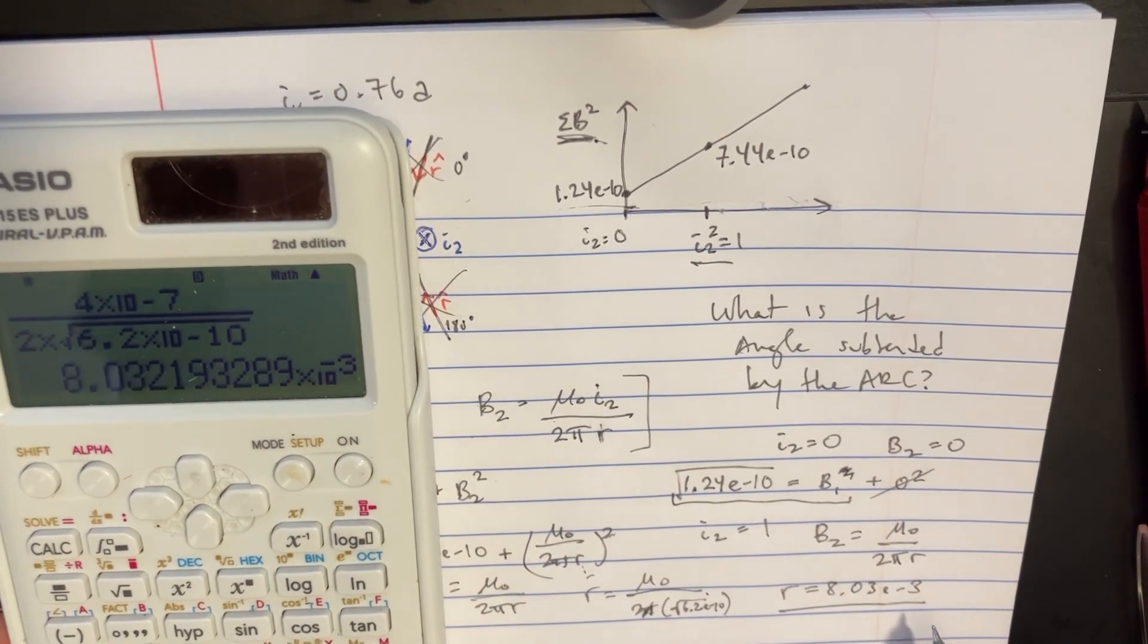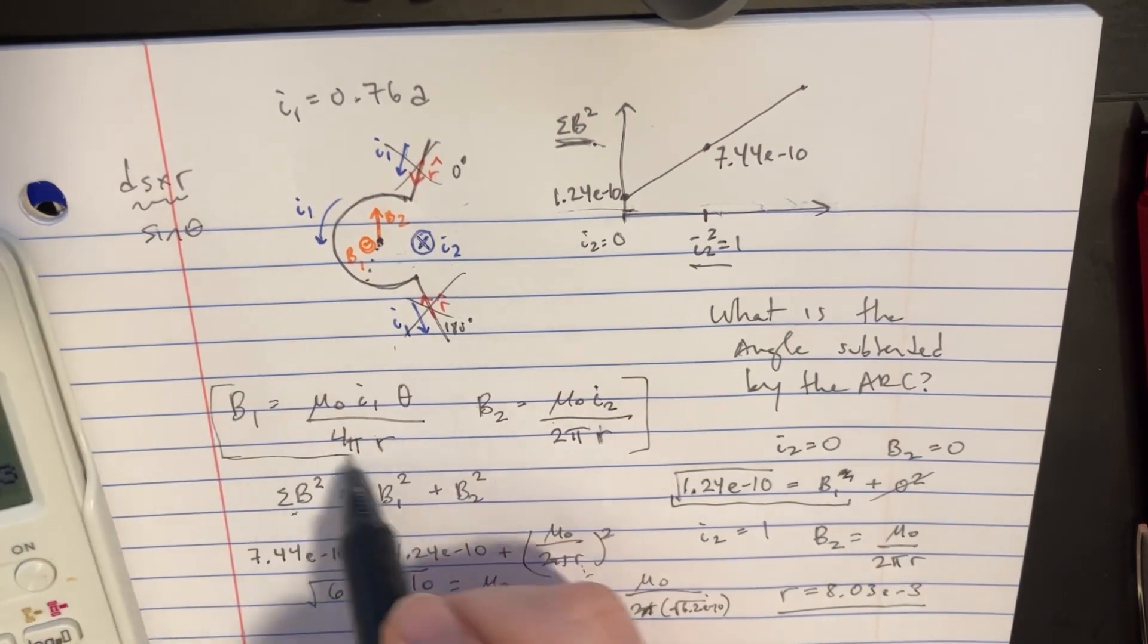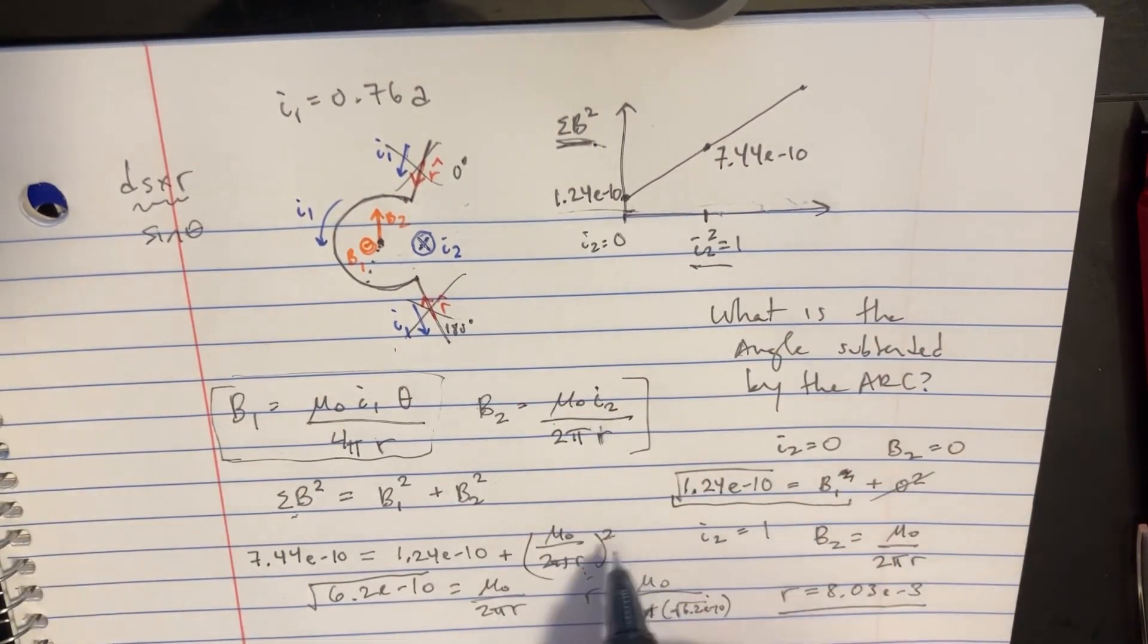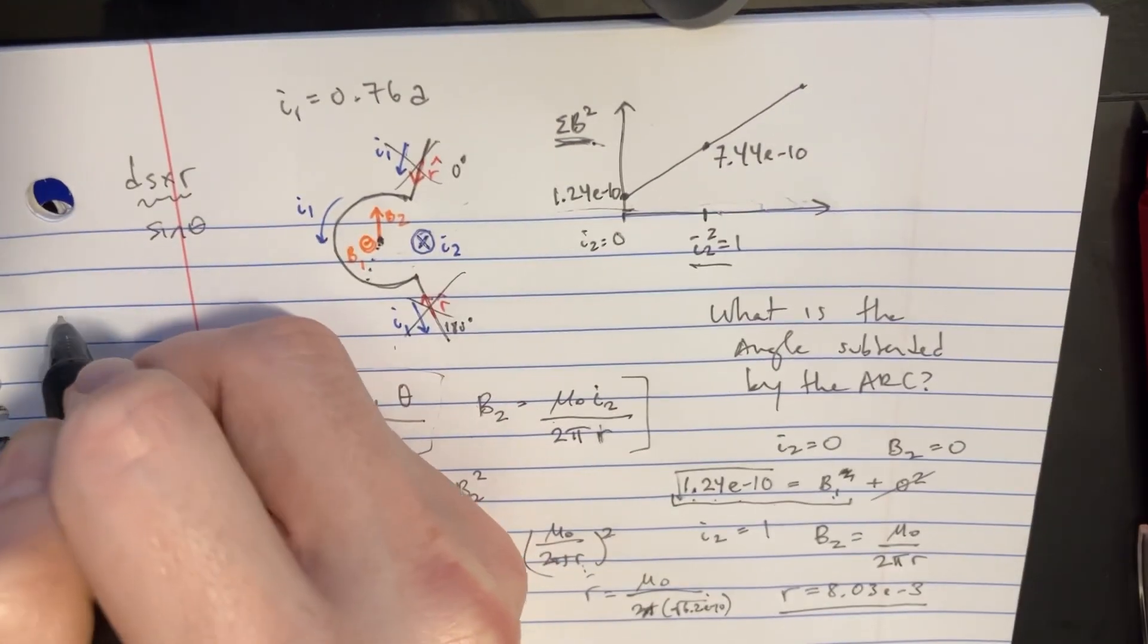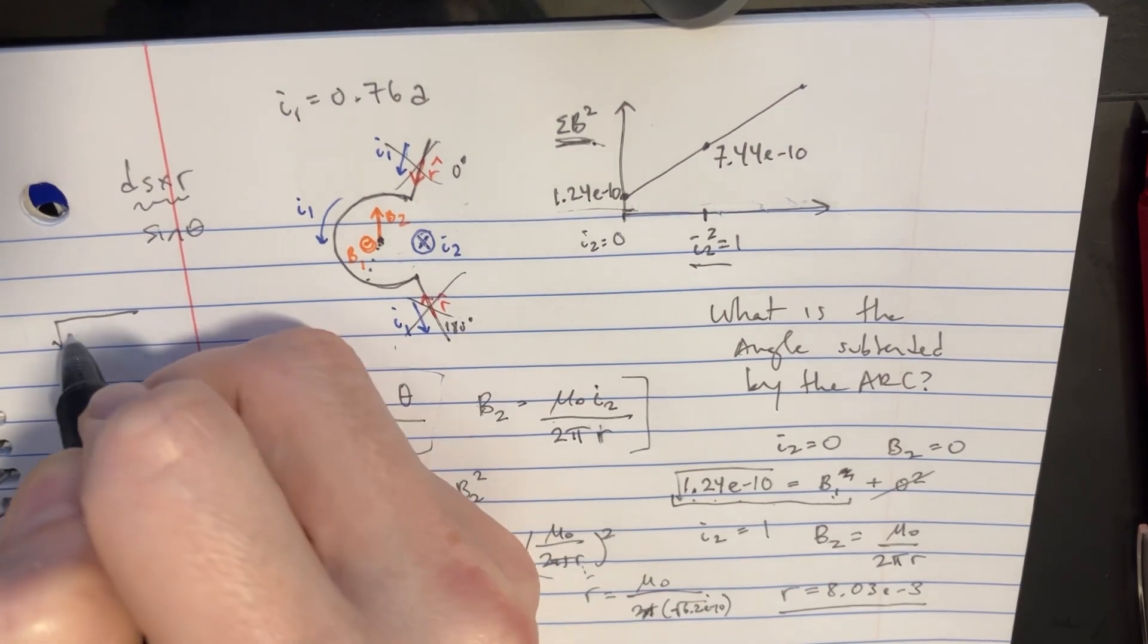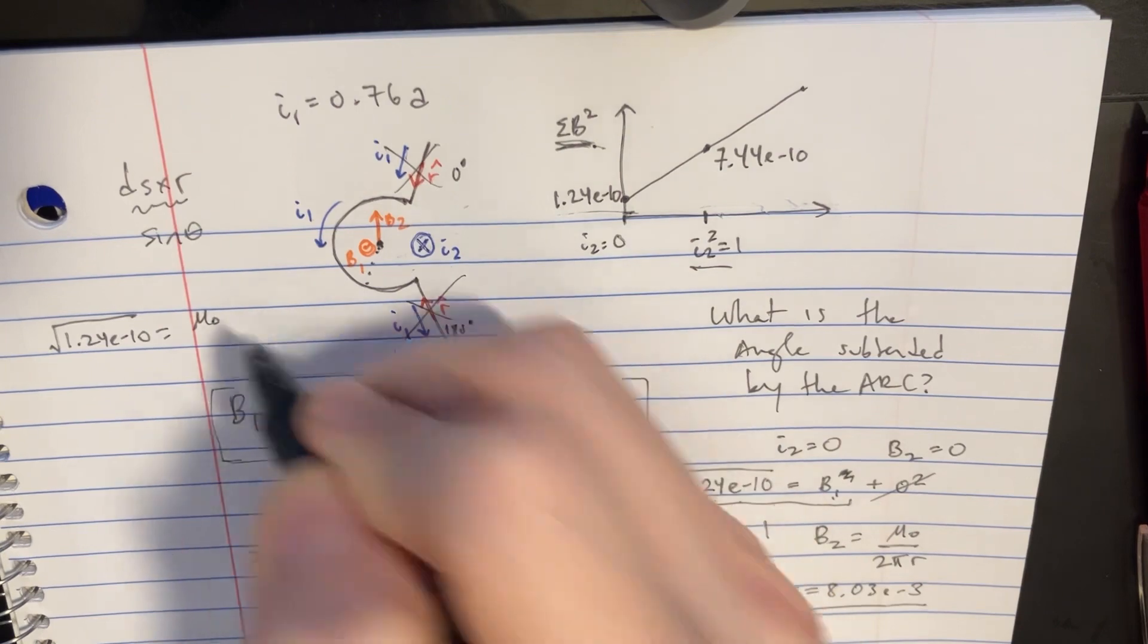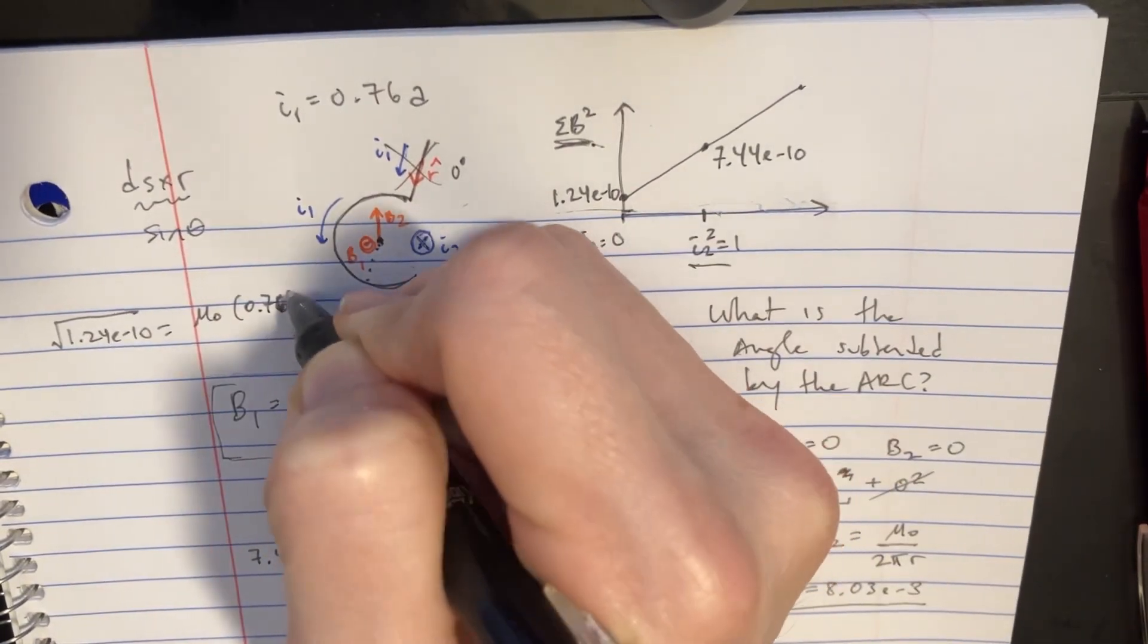Now, from here, let's go back into our B1 equation. And all we got to do is just rearrange this a little bit because we know B1. B1 is the square root of this. We can essentially say that the square root of 1.24, e to negative 10 is equal to mu naught. And we know what that 0.76i is right there.